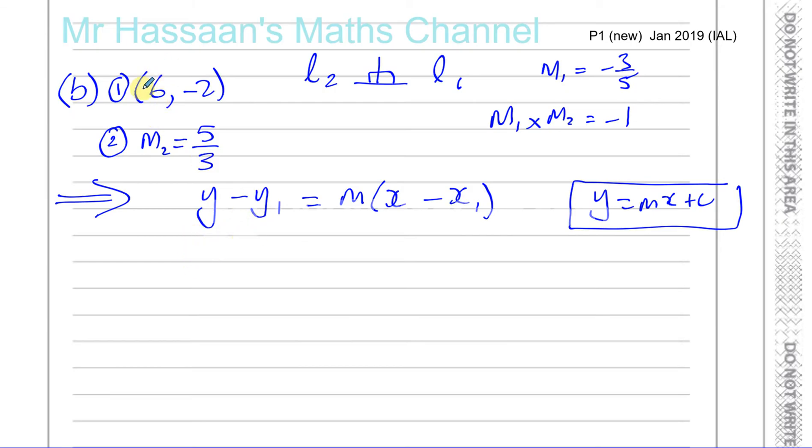So let's see how to use it. Basically, the point that we have is x1 is the x value and y1 is the y value of that point. So we're just going to substitute these values in. So you've got y minus, now y1 is the y coordinate, so you're going to have minus 2. So y minus minus 2 equals m, which is 5 over 3, times x minus the x value, which is 6.